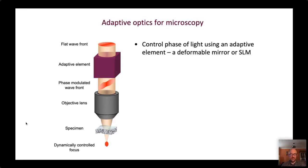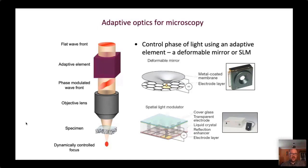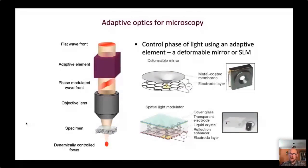The elements we use are either deformable mirrors — a reflective membrane whose shape we can change by applying forces with an actuator structure built into the mirror — or liquid crystal spatial light modulators, which change the phase of light by altering the properties of liquid crystal materials above each pixel. A deformable mirror is particularly useful in fluorescence microscopy with broadband and unpolarised light, while spatial light modulators are best suited to laser illumination with narrowband and polarised light.